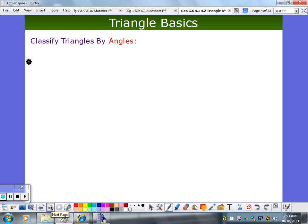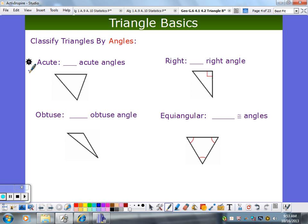So we can also classify triangles by angles. So an acute triangle has how many acute angles? Less than 90 degrees. So how many of these angles are going to be less than 90? What? All of them.